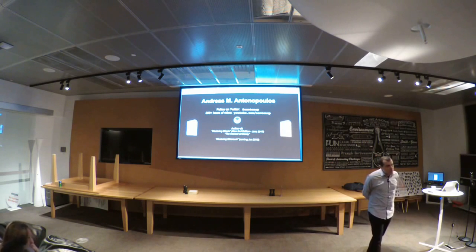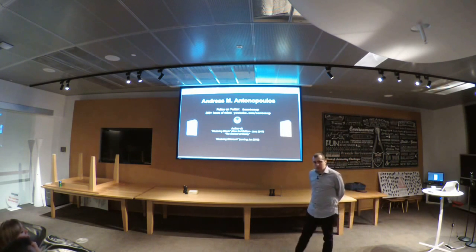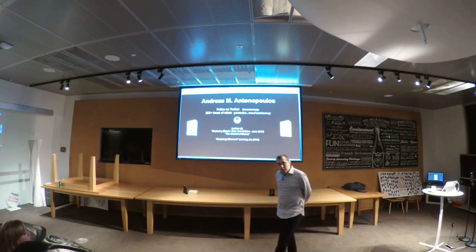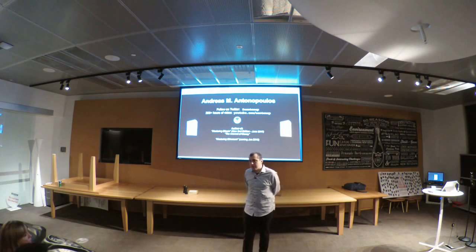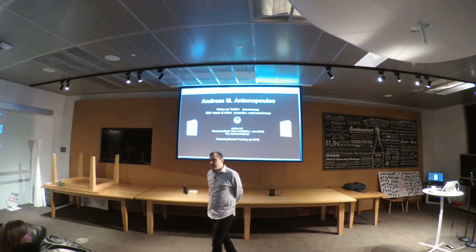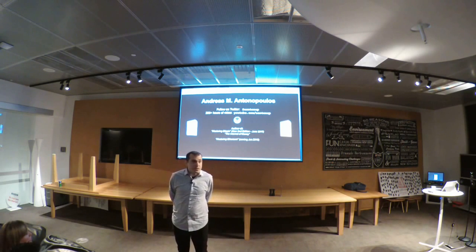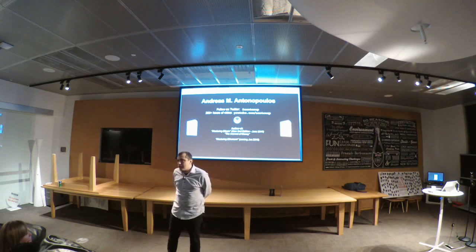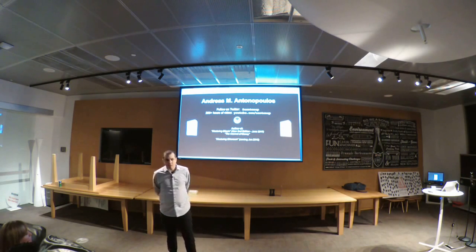Then we are going to implement Schnorr signatures and maybe a bunch of other technologies. Spoonet, which is a refactoring of the block header to introduce some new capabilities and flexibilities into the system. Maybe flexible transactions. Maybe different types of digital signature algorithms. All of the above.